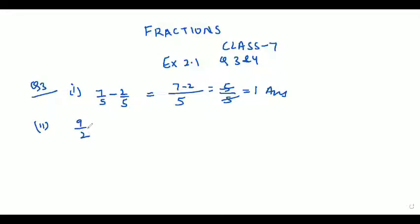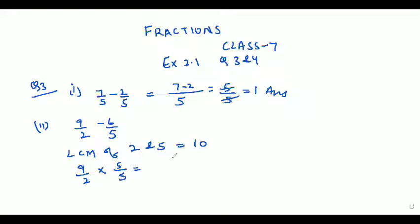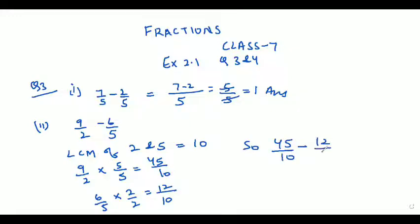Now come to the second part. The second part is 9/2 minus 6/5. First of all, we will take the LCM of the denominators. 2 and 5 gives LCM 10. We make the denominator 10 by multiplying 9/2 by 5/5, giving 45/10. For 6/5, multiply by 2/2, giving 12/10. Now subtract: 45/10 minus 12/10 equals 33/10, or as a mixed fraction, 3 and 3/10. This is our answer.